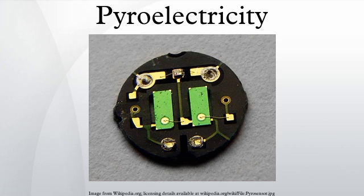Pyroelectricity is the ability of certain materials to generate a temporary voltage when they are heated or cooled. The change in temperature modifies the positions of the atoms slightly within the crystal structure, such that the polarization of the material changes. This polarization change gives rise to a voltage across the crystal. If the temperature stays constant at its new value, the pyroelectric voltage gradually disappears due to leakage current.